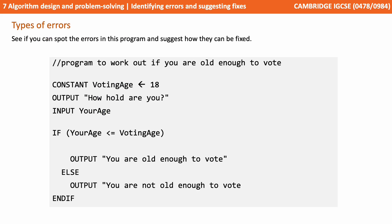We've got a pseudocode program here. It's a program to work out if you're old enough to vote. It sets a voting age constant to 18 and then asks you how old you are. You type it in. We then check your age against the voting age and output a message whether you're old enough to vote or not.